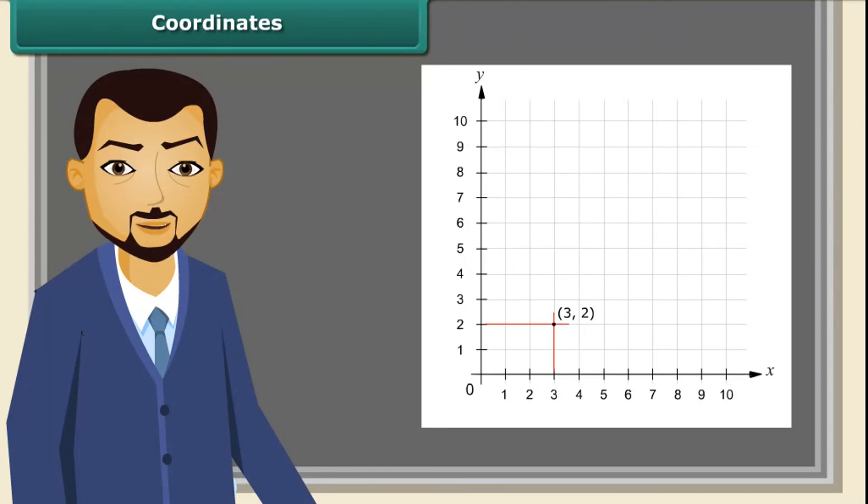3 is called the X coordinate of the point. 2 is the Y coordinate of the point. We say that the coordinates of the point are (3, 2). Always the first number indicates X coordinate, and the second number indicates Y coordinate.